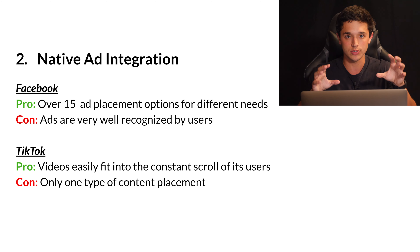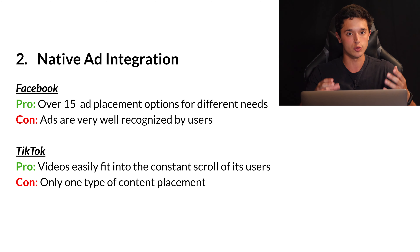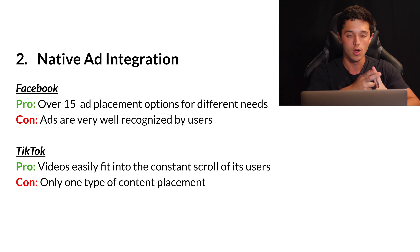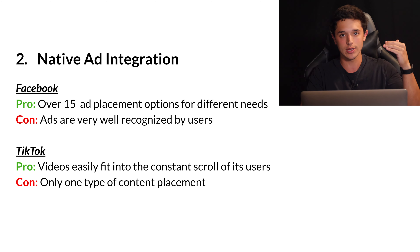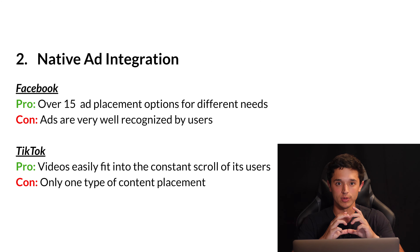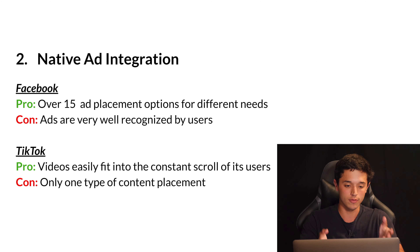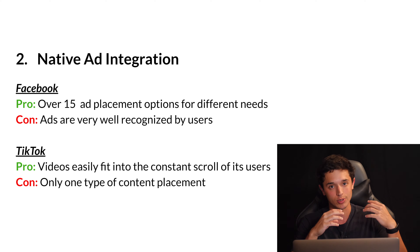The pros and cons of native ad integration: For Facebook, there are over 15 placements to choose from — Instagram story ads, video, Messenger targeting, and more — giving many use cases to take advantage of. A con is that ads are very well recognized by users on Meta platforms. With TikTok, it's an endless scroll of content, so if you make good content, it fits in natively and people may not even notice it's an ad. The con of TikTok's ad integration is that there's only one type of placement — video — fitting within TikTok's scroll feed.